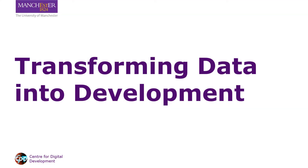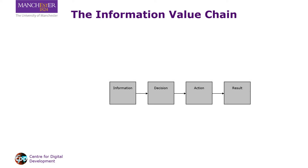How do we turn data into development? Our starting point will be the information value chain, a simplified version of the ICT4D value chain that I discussed in an earlier presentation. The information value chain explains that we obtain value from information when it feeds into decisions that turn into actions that create development results, such as progress towards one or more of the SDGs. Information creates development value only when all of these steps are completed.